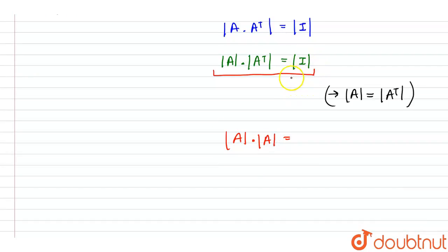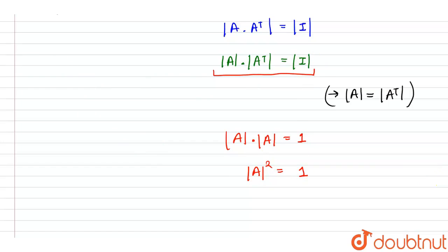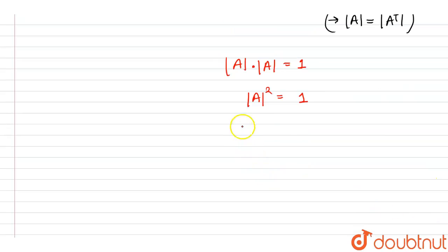The identity matrix I has all diagonal elements equal to 1 and off-diagonal elements equal to 0, so the determinant of I is always equal to 1. Therefore, determinant of A squared equals 1.